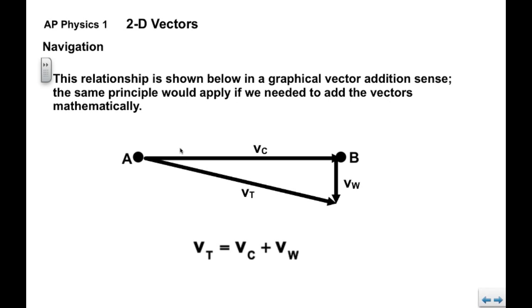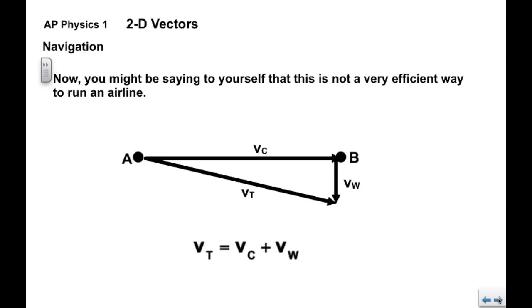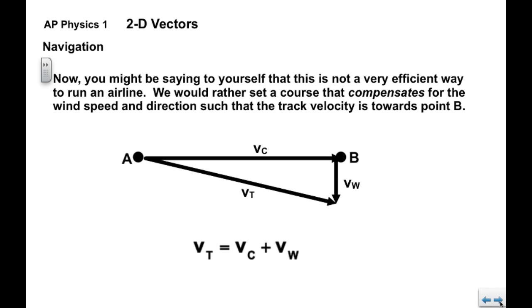What we see here is the relationship shown in a graphical vector addition sense. Of course, the same principle would apply if we had angles that weren't east and south. If we needed to add the vectors mathematically, the same vector relationship would apply. Now you might say to yourself, this isn't a very sensible way to get where you need to go. So what we'd rather do is set a course that in some way compensates for the wind speed and direction, so that the plane, the track velocity, actually points where I need to go.